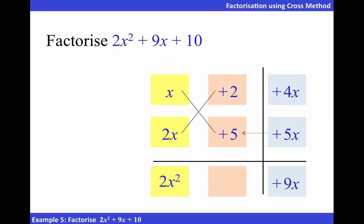Now, let's check. Positive 2 times positive 5, we get positive 10, which is the same as the constant term in the original expression.